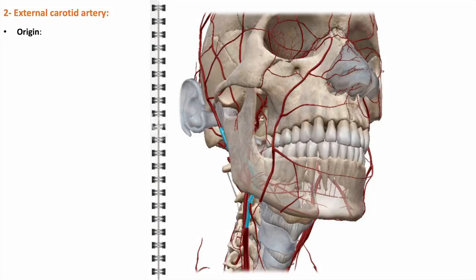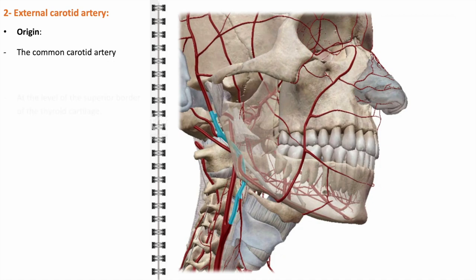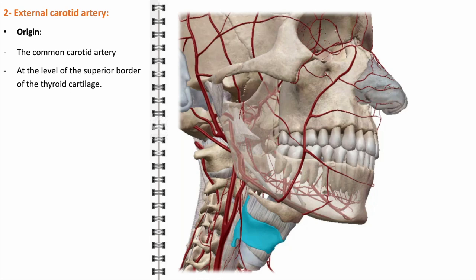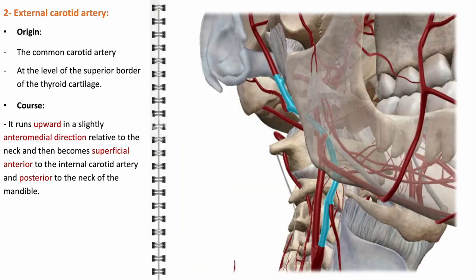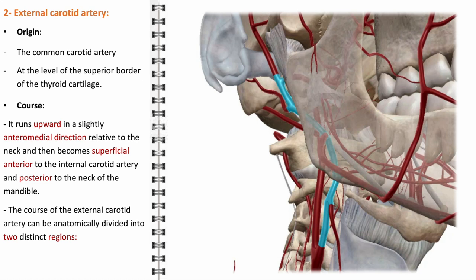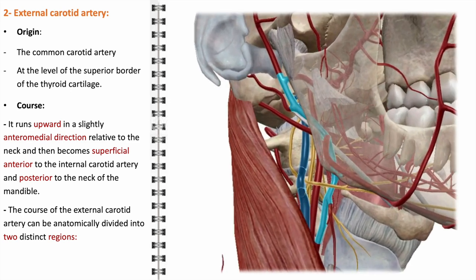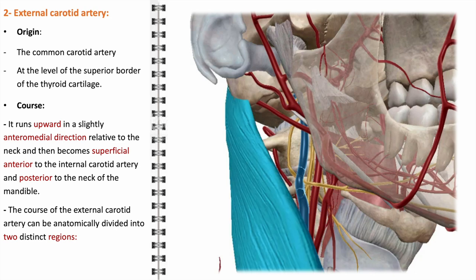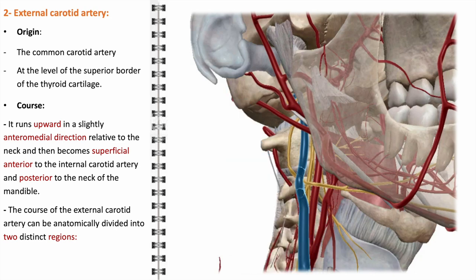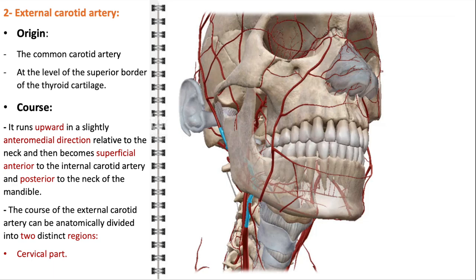The external carotid artery, a vital component of the facial vasculature, is one of the two primary branches of the common carotid artery and plays a pivotal role in supplying blood to the face and neck. Originating from the common carotid artery at the level of the superior border of the thyroid cartilage, it courses upwards in a slightly anteromedial direction, then transitions to a more superficial trajectory, positioning itself anterior to the internal carotid artery and posterior to the neck of the mandible. The artery's course is anatomically divided into two distinct regions: the cervical part and the cephalic part.